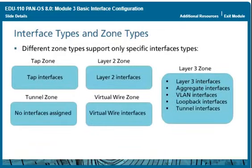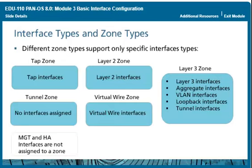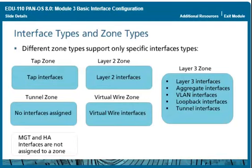To support a wide variety of deployment options, PAN-OS software includes different zone types and interface types. Each zone type supports specific interface types. The five zone types and the interface types they support are illustrated here, and different zone and interface types can be used simultaneously on different physical firewall interfaces. A Layer 3 zone supports a number of interface types, all assigned IP addresses. Tunnel zones are available starting in PAN-OS 8.0 and are used for Tunnel Content Inspection in tunnel-in-tunnel encapsulation scenarios. For more information, refer to the PAN-OS 8.0 Administrator's Guide at paloaltonetworks.com/documentation.